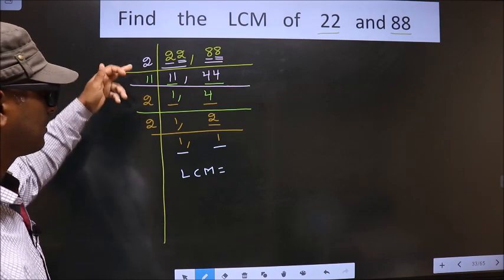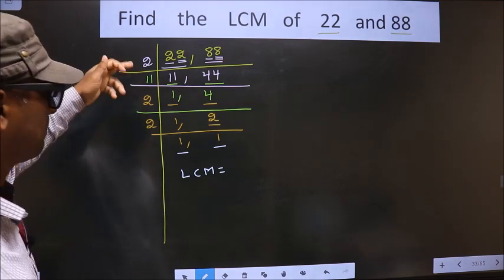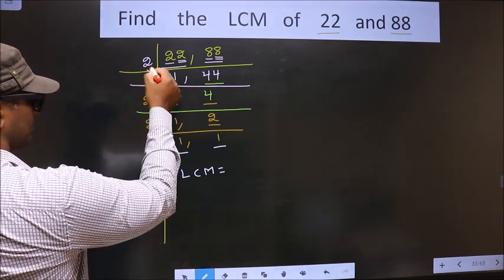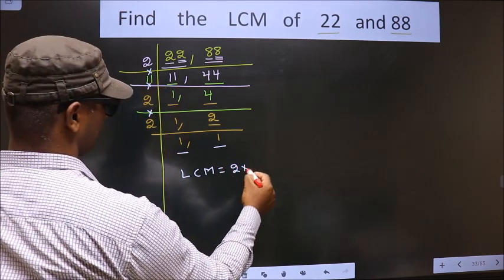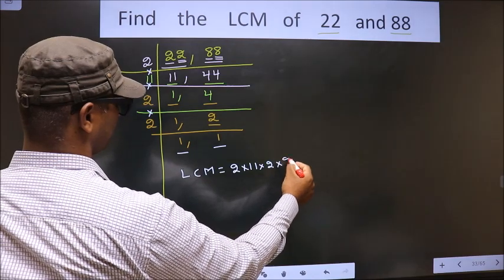So now our LCM is - LCM is the product of these numbers. That is 2 into 11 into 2 into 2.